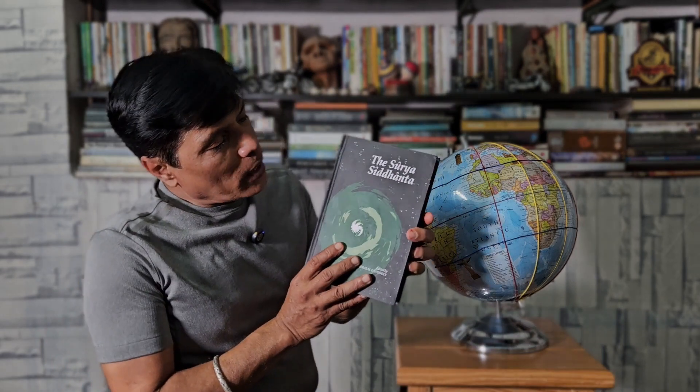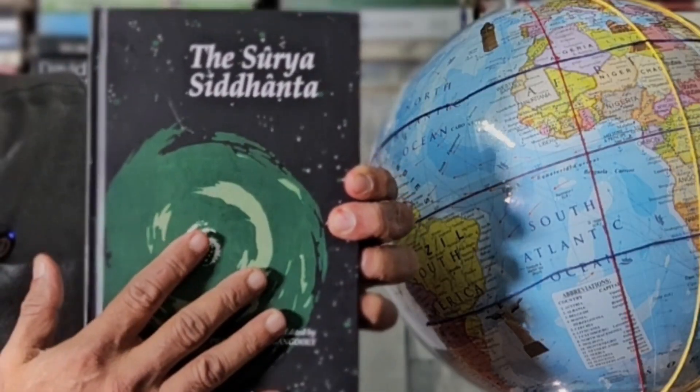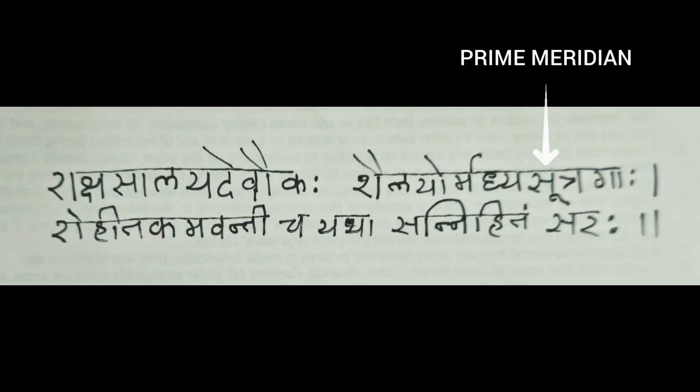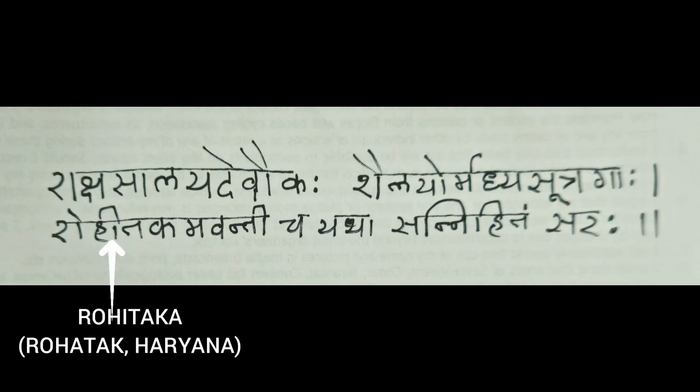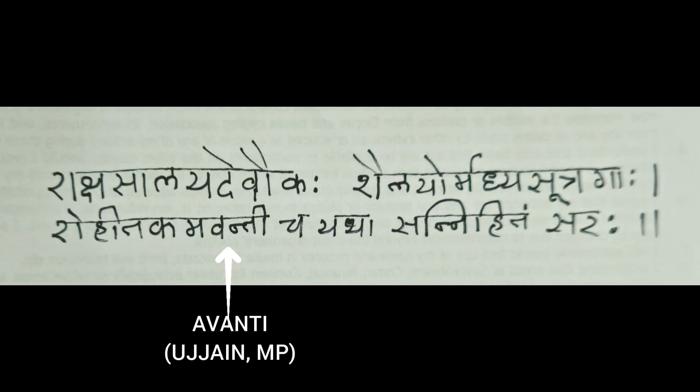The oldest reference of ancient Indian Prime Meridian is found in Surya Siddhanta — the astronomical treatise dating back to the 4th and 5th century, originally written in Sanskrit. It seems this Surya Siddhanta written in the 4th and 5th century is a revised and updated version of an even earlier work. Shlok 62 of Chapter 1 of Surya Siddhanta clearly defines the Prime Meridian of ancient India. It states that the Madhyasutra — the Prime Meridian — is that which passes through Rakshasalaya (the South Pole), Devatalaya (the North Pole), and also through the cities of Rohitaka (present-day Rohtak in Haryana) and Avanti (present-day Ujjain in Madhya Pradesh).